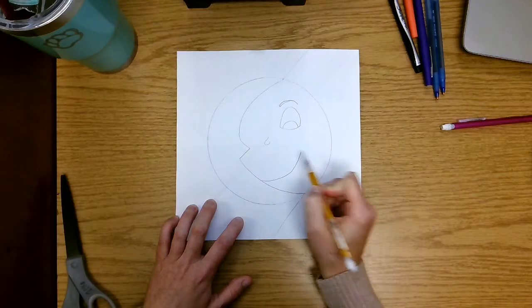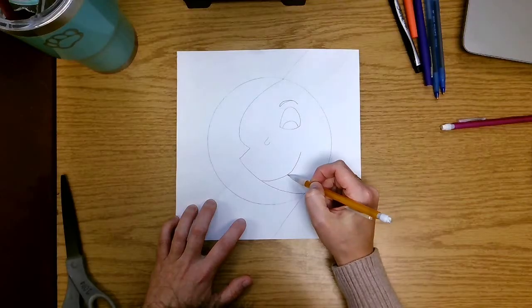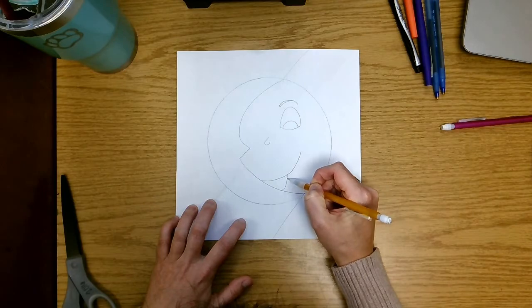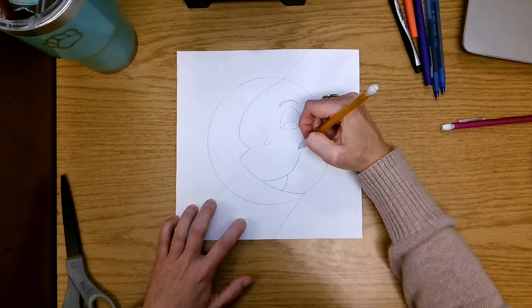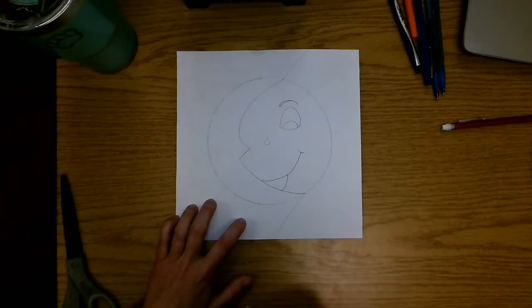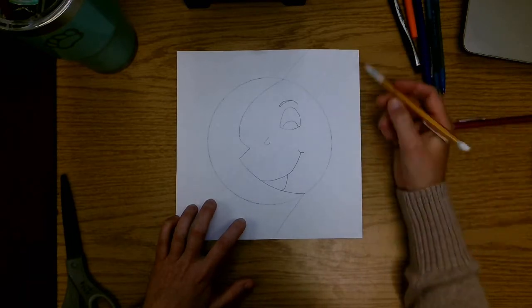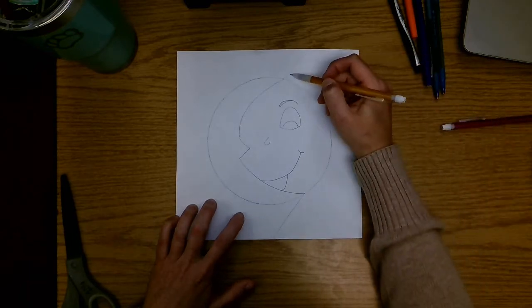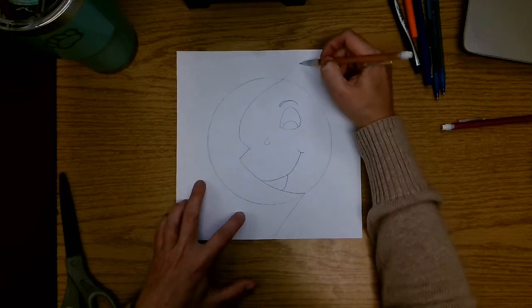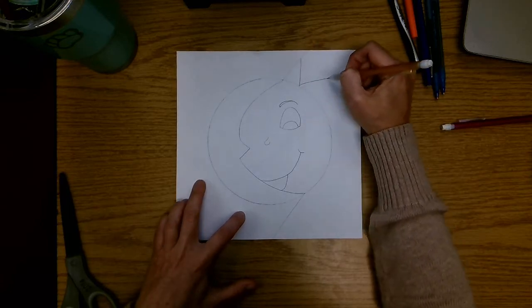I want my sun to look happy because warm colors usually represent cheerful and happy, exciting emotions. In the background, I'm going to add the rays of my sun, so I can use a zigzag line to make my first row of rays.